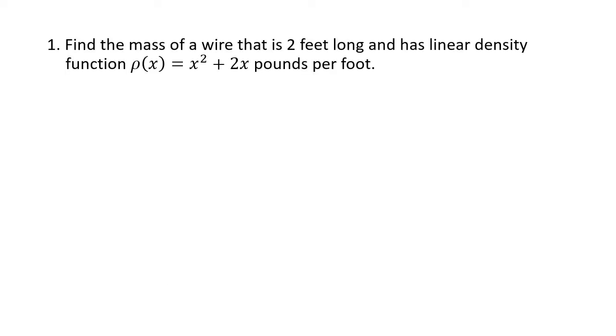For this first problem we have a linear density function. What we've learned in this section is that the mass is equal to the integral from a to b of your density function rho of x. I know it looks like a p, but it's actually the Greek letter rho. If our wire is 2 feet long, we can assume that it starts at 0, so our integral is going to go from 0 to 2. Our density function is x squared plus 2x. So just a relatively simple integral to figure out.